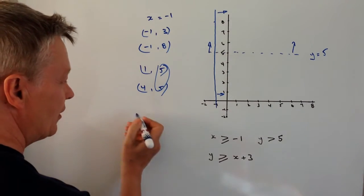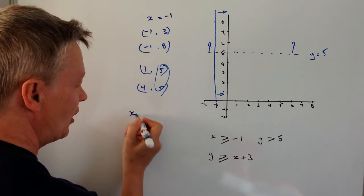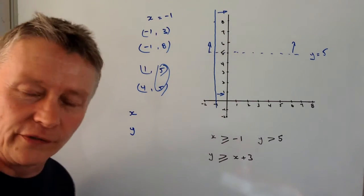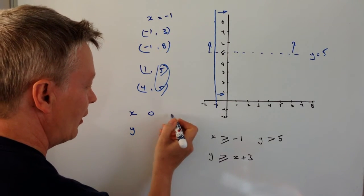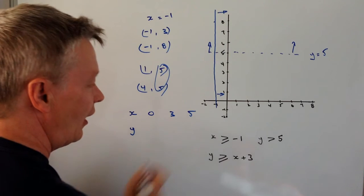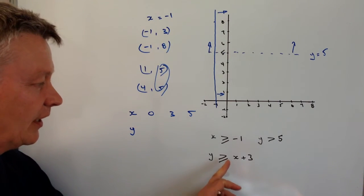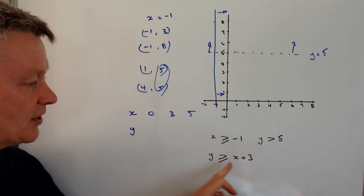In that what we do is we say, well, I'm just going to choose a couple of values of X and get their equivalent value of Y. Well, it's just easier for me to choose 0, 3, and 5 because I know then that when X equals 0, Y equals 3.